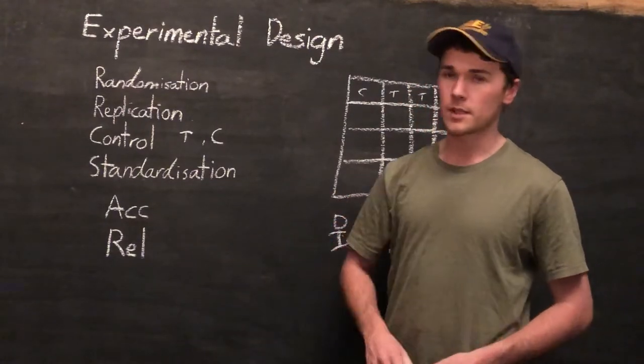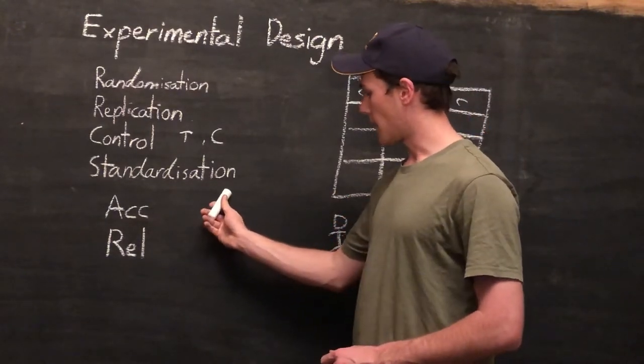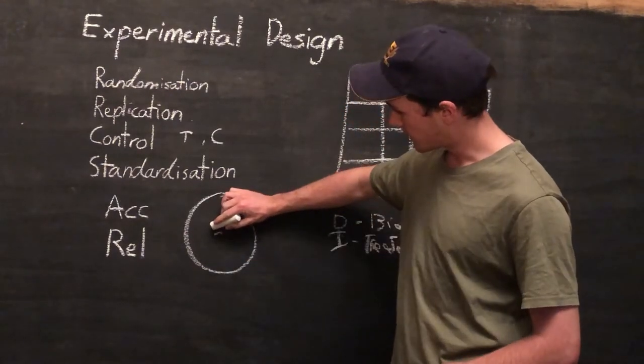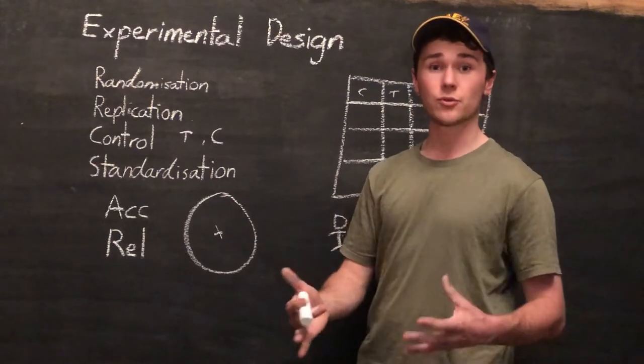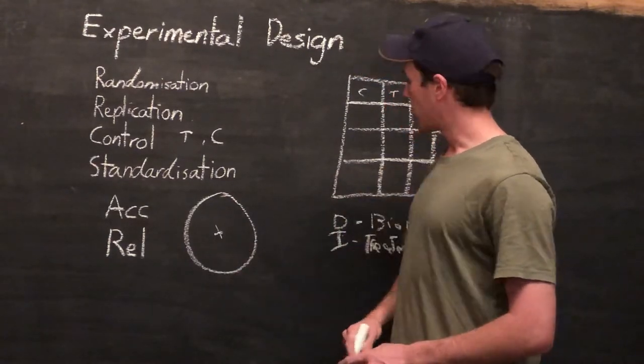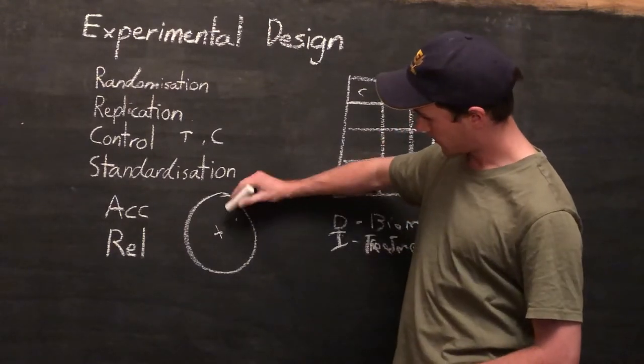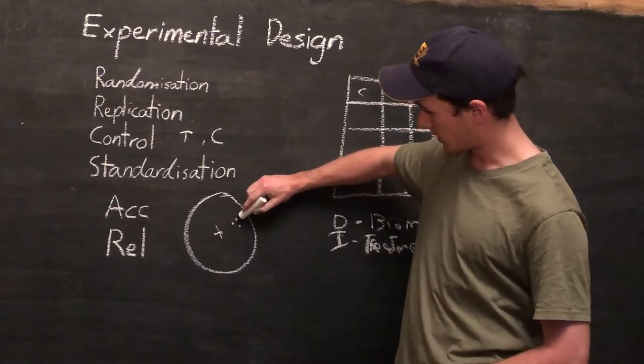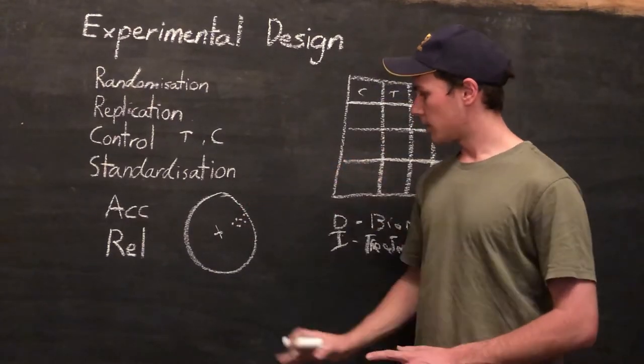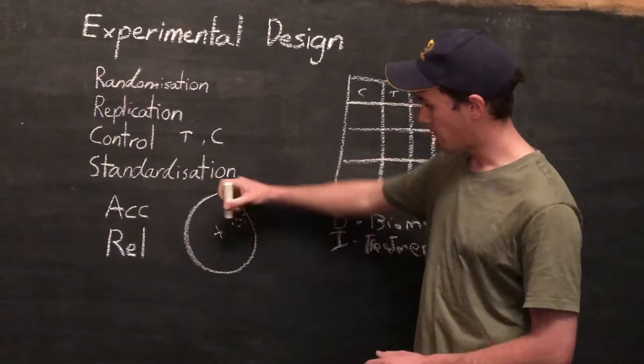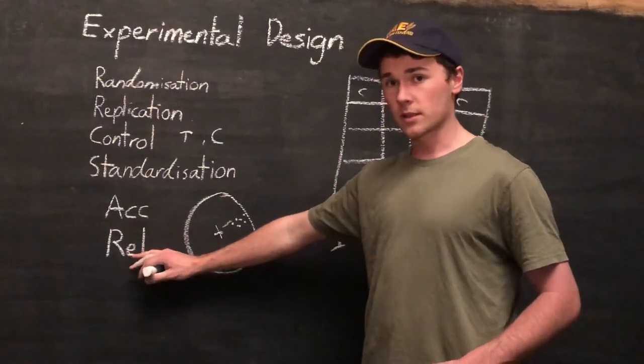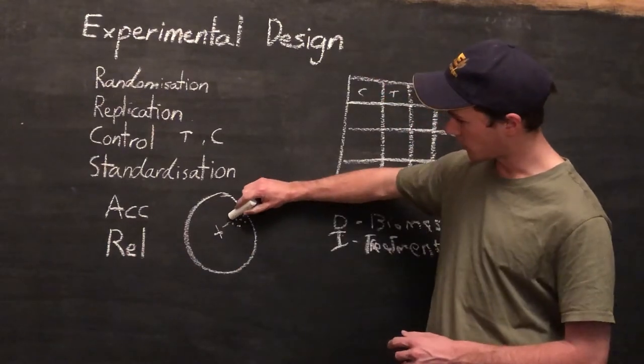Now, I learned this with a diagram of a target. So say that's the bullseye. That's our true, that is the true result. That's what we want to get. But say the results from this experiment made us hit the target up here. So accuracy is how far away we are from the bullseye, whereas our reliability is how tight our grouping is.